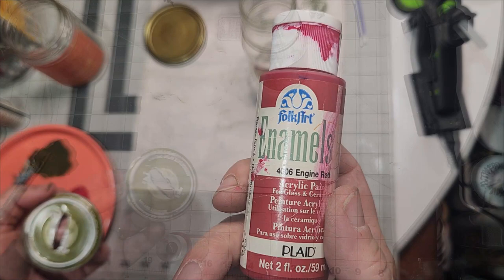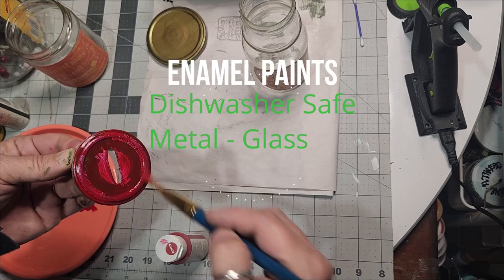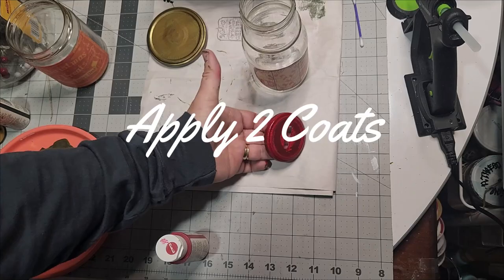Take your sanding sponge and sand the metal. You will get better adhesion with your paint. Once again, use enamel paints for glass and metal. That makes them dishwasher safe. Two coats and allow at least 72 hours before getting any water on it.